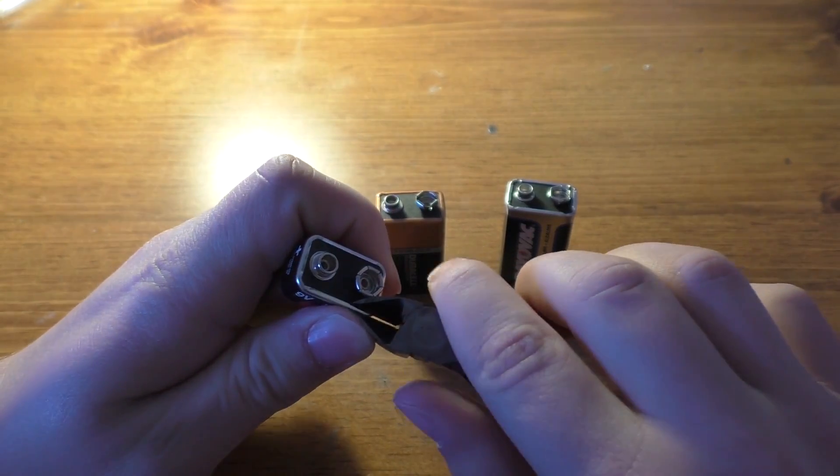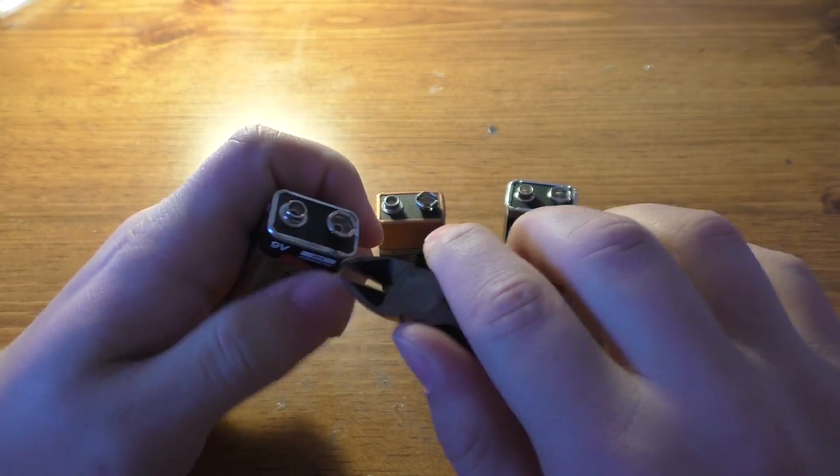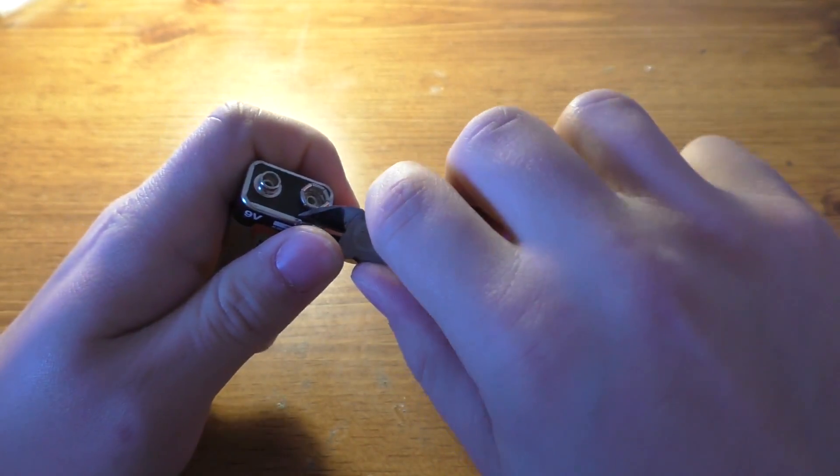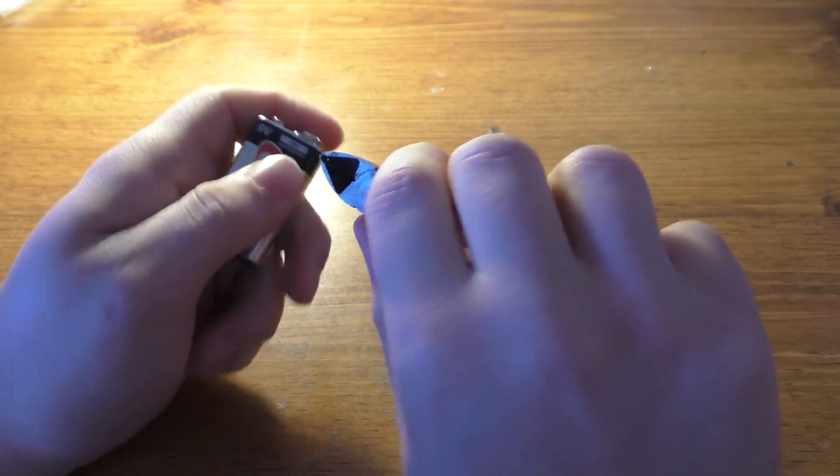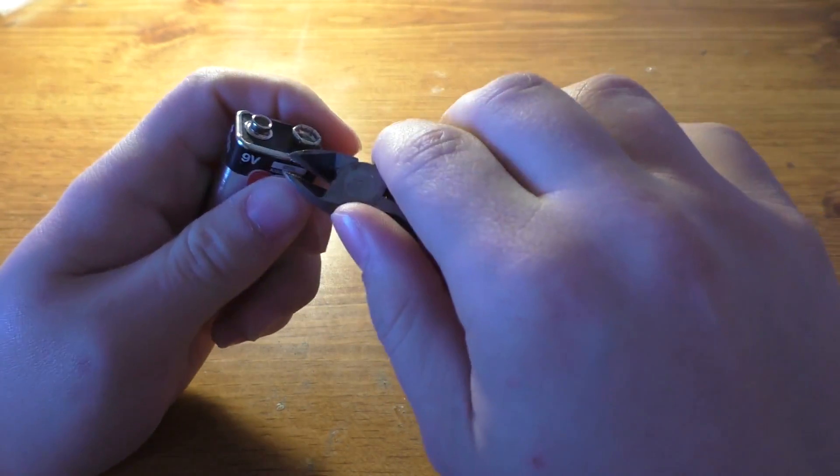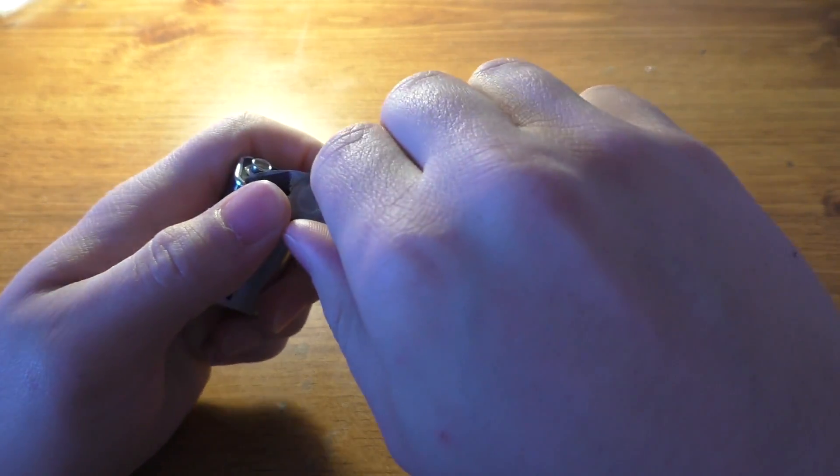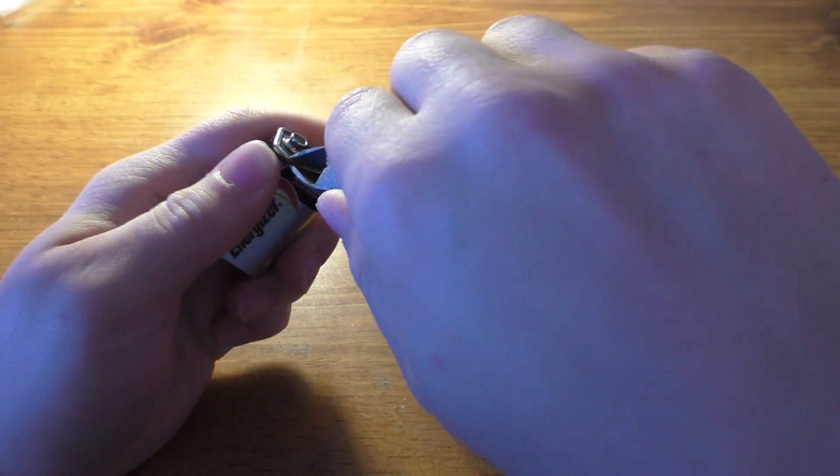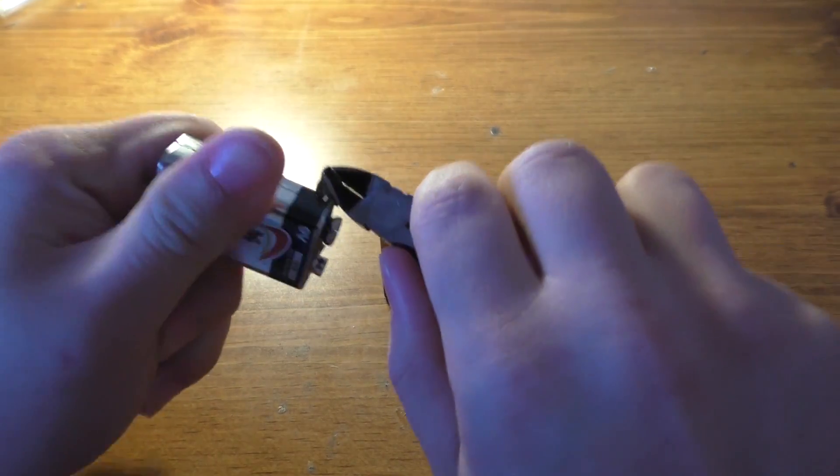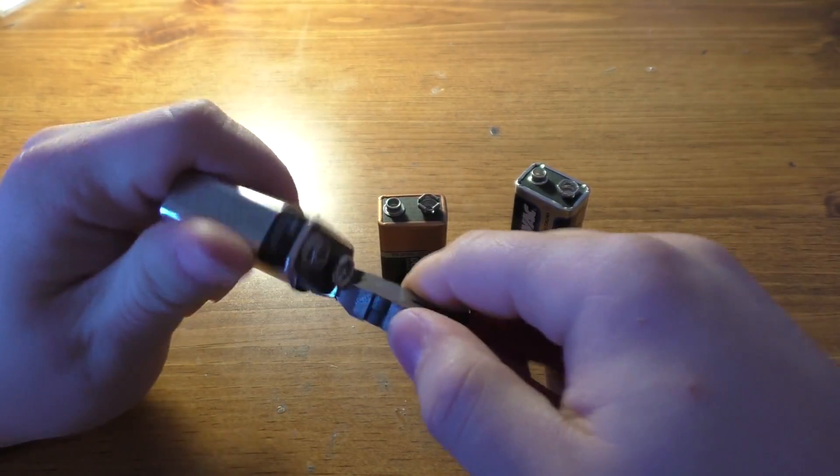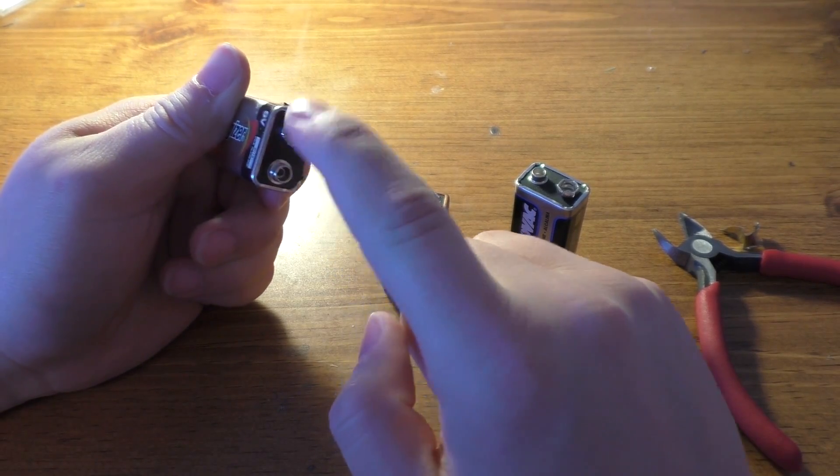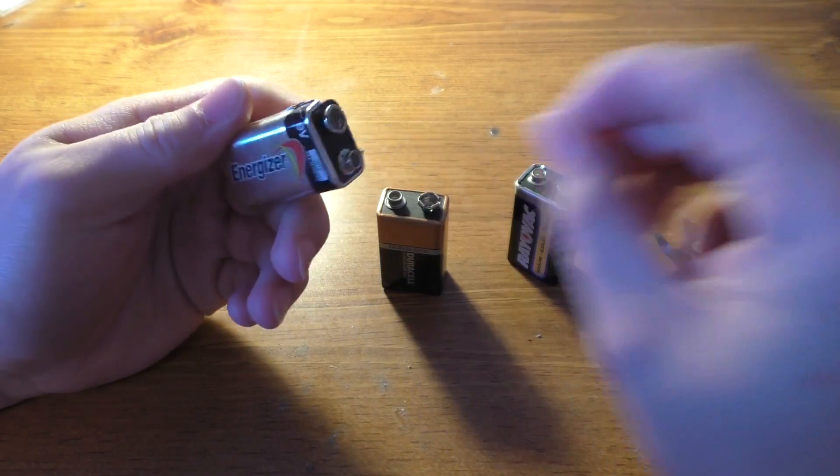Personally, I do prefer Energizer batteries over the other two. Rayovac, I particularly dislike, simply because I've had a lot of them leak. Not just 9 volts, but all batteries in general, double-A's, triple-A's, all that stuff. I'll go ahead and tear these open. To me, the most useful part of tearing apart 9-volt batteries is actually using these tops as battery connectors.